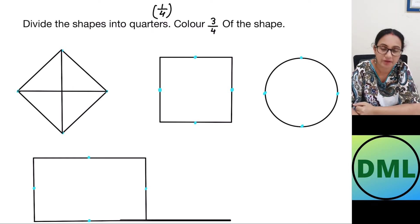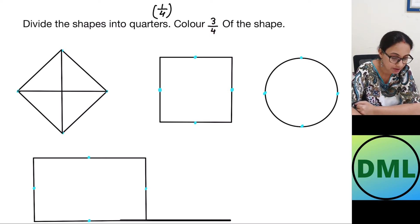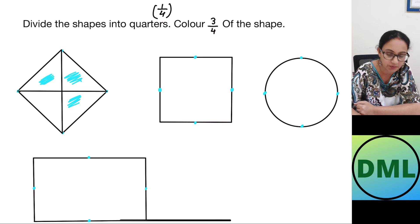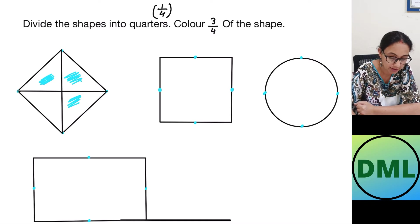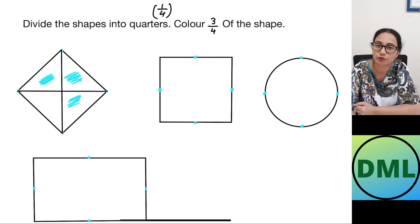I am dividing the square diagonally — joining like this and like this. Now I have to color three by four, meaning out of four parts I color three parts — this part, this part, and this part. Three parts colored.